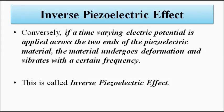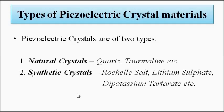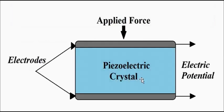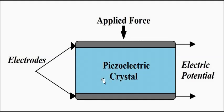The piezoelectric crystal materials used for fabrication of these transducers are of two types: natural and synthetic. Natural crystals include quartz and tourmaline. Synthetic crystals include Rochelle salt, lithium sulfate, and dipotassium tartrate. In the basic setup, the piezoelectric crystal is placed between two electrodes across which the electric potential is obtained and passed to signal conditioning circuitry. The force is applied perpendicular to the piezoelectric crystal, causing deformation and producing an electric potential.